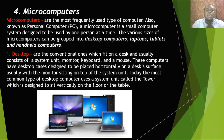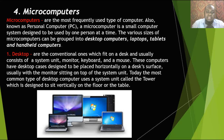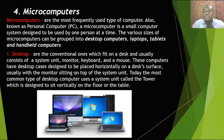Desktop computers are the conventional ones which fit on a desk and usually consist of a system unit, a monitor, a keyboard, and a mouse. These computers have desktop cases designed to be placed horizontally on a desk surface, usually with a monitor sitting on top of the system unit. Today, the most common type of desktop computer uses a system unit called a tower, designed to sit vertically on the floor or on the table.